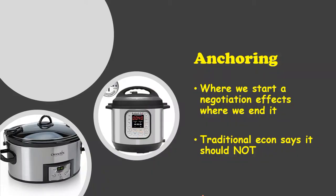Anchoring. Anchoring says when we start a negotiation, that affects where we end it. Traditional economic theory says that shouldn't be the case — if you value something a certain amount, that should decide the negotiation. But it doesn't always work that way. Say you're in a store with two crockpots: one sells for $20 and a slightly fancier one sells for $40. What are people going to buy? Almost everybody buys the $20 crockpot and hardly anybody buys the $40 one.